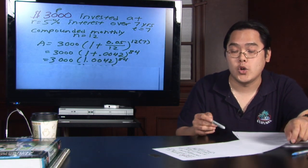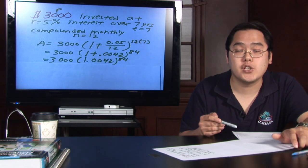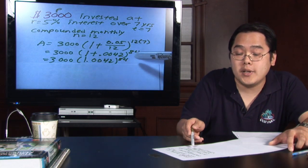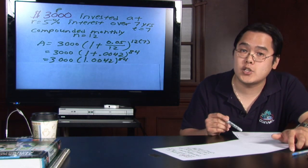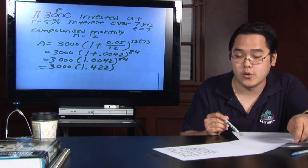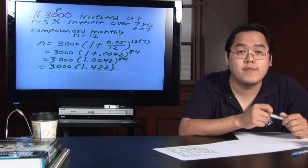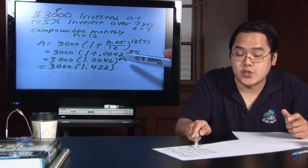You have to add it with the 1, so you have 1.0042, and the key calculation is being able to raise this number to the 84th power. This is where your calculator is going to do the work for you, but when you see that, you're going to have 1.422 as a result.